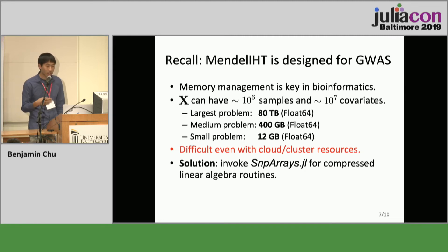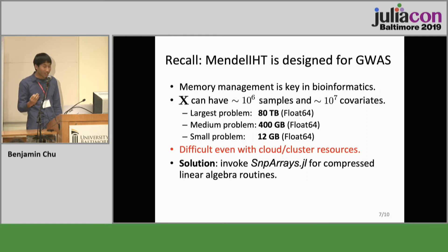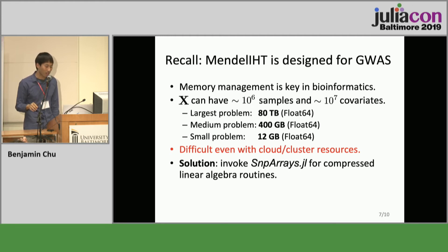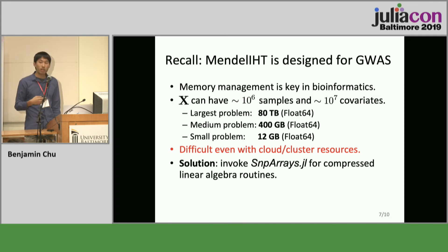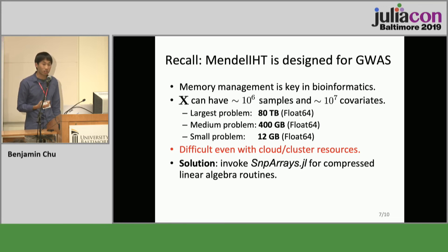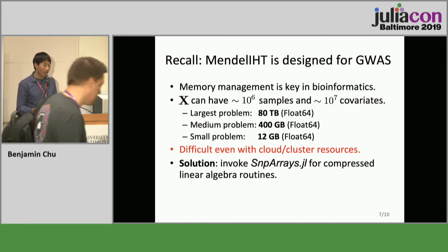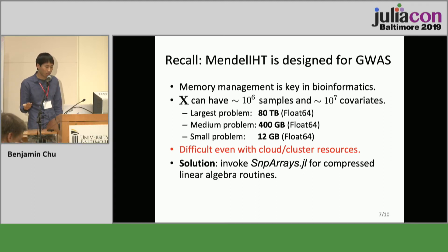Because there's a lot of DNA and you can collect data from many people, these design matrices can get really big — the largest ones can be several dozen terabytes. The interesting, tractable problems are around 400 to 800 gigabytes. If you store such a matrix in double precision, it won't work for our applications because you'd be hard-pressed to find a computing node with 400 gigabytes of RAM, even on a cloud computing cluster.